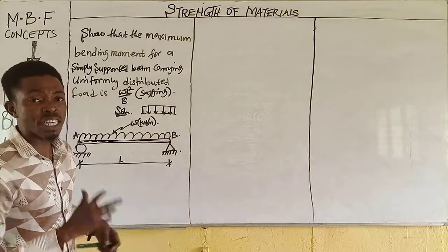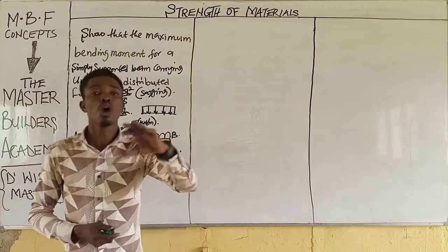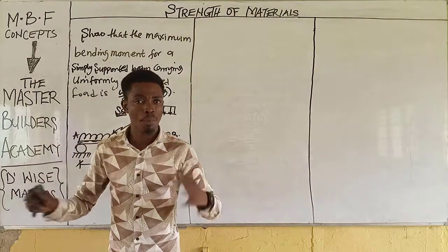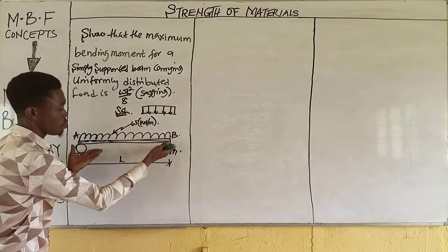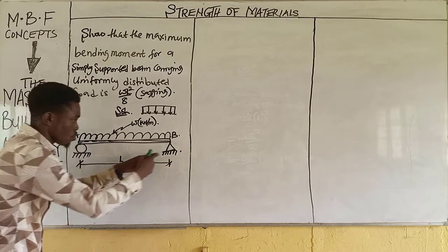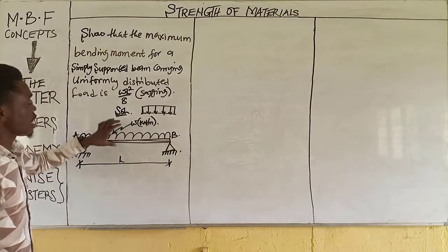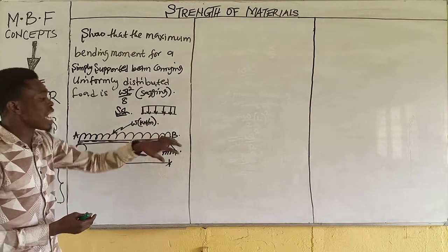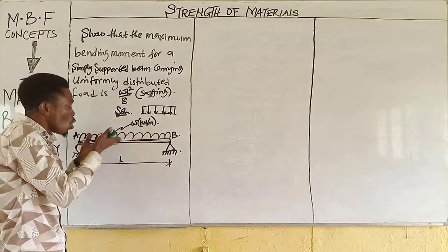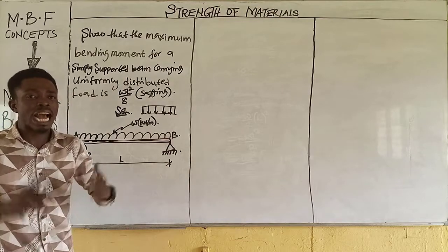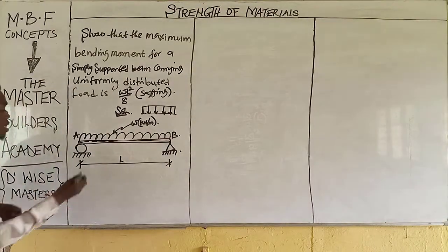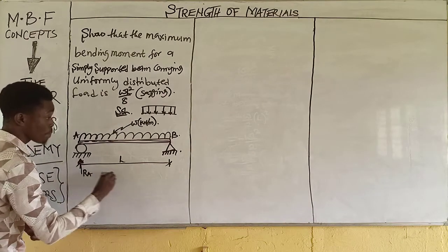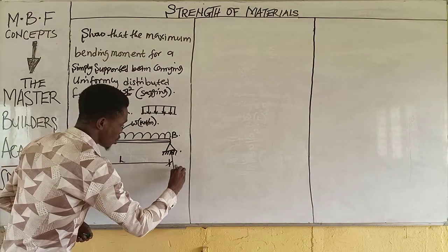For a simply supported beam, the first thing you obtain any time you are asked to find the maximum bending moment or the shear force diagram is the support reaction. If a load is acting on this structure, these two reactions act upward in order to resist the load, so that the structure acts in equilibrium. We draw the free body diagram, with reaction at A and reaction at B, separated by a distance L.